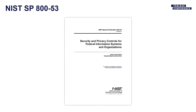SP 800-53 is called the Security and Privacy Controls for Federal Information Systems and Organizations. It's a captivating read, and it's somewhat difficult to understand — there's a lot of vagaries in it, which makes this challenging. There are a lot of kind of blanks in it where the individual agency fills in their own specifics on some of these requirements, and hence that's the root of a lot of the variability we see from our customers.